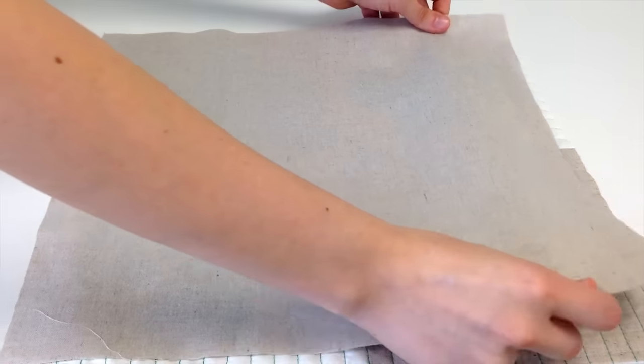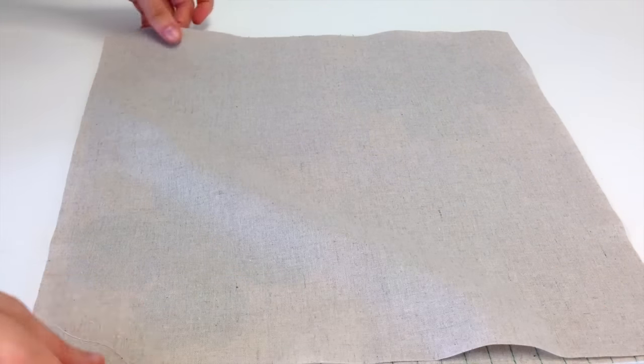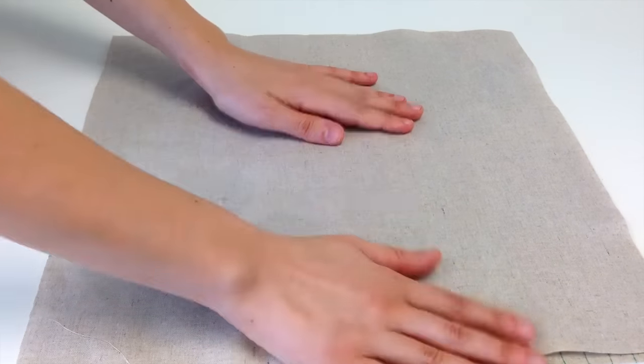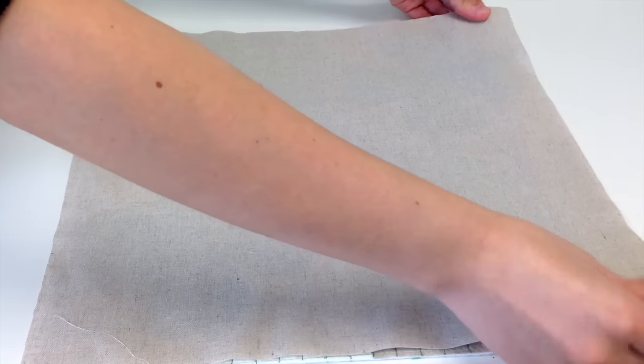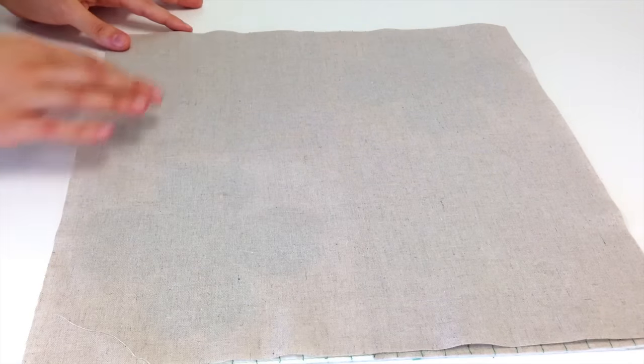Take your backing fabric cut in fabric F and place it right sides together to your front placemat. Stitch all the way around your piece, leaving a small unsewn portion in order to flip the right side of your placemat through.